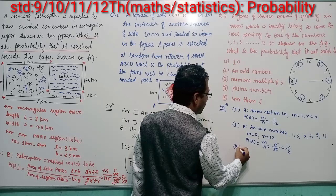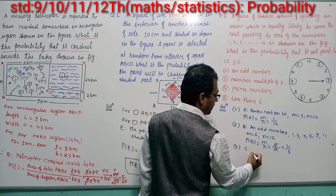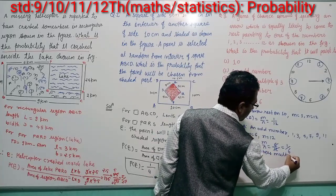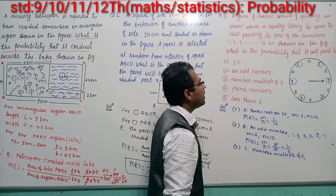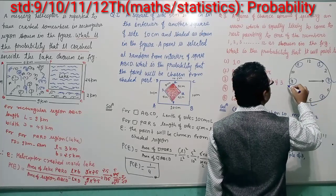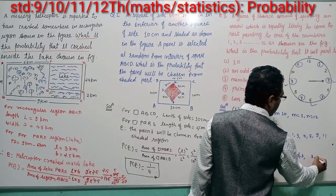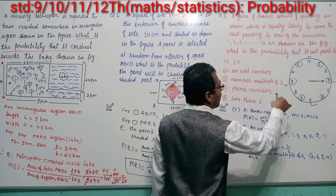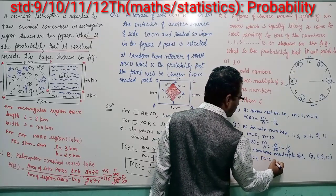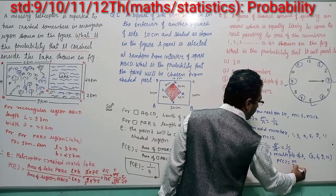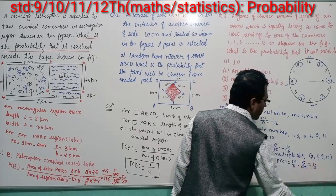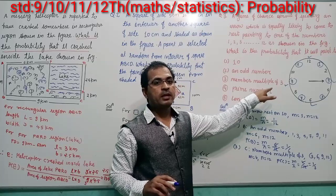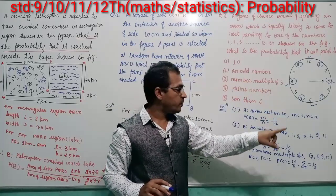Sub-question C: let event C be that the arrow rests on a number that is a multiple of 3. The multiples of 3 from 1 to 12 are: 3, 6, 9, and 12. So favorable events m = 4 and total outcomes n = 12. P(C) = 4/12 = 1/3. The probability that the arrow comes to rest on a multiple of 3 is 1/3.